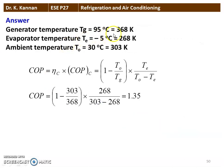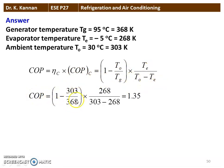Generator temperature is 95 degree Celsius, which is 368 Kelvin. Evaporator temperature is minus 5 degree Celsius, which is 268 Kelvin. Ambient temperature is 30 degree Celsius, which is 303 Kelvin. COP equals efficiency of the Carnot cycle into COP of the Carnot refrigerator: (1 minus TO by TG) into (TE by TO minus TE). Substituting: (1 minus 303 by 368) into (268 by 303 minus 268), equal to 1.35. So, COP of the system is 1.35.